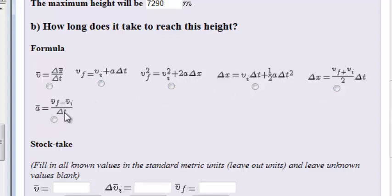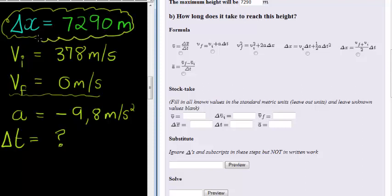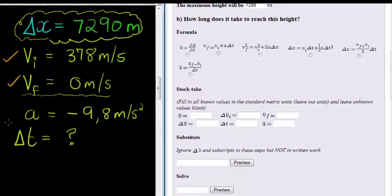It can be—not that one, doesn't have time in that formula—that formula or this formula. All of, most of the formulas have time in them. However, I do not want to use a formula that has Δx in, because I calculated the Δx and I might have made a mistake.